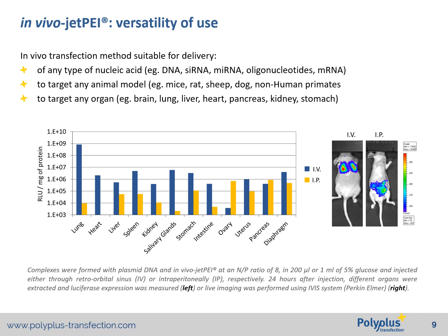When DNA in vivo-jetPEI nanoparticles are injected using the intravenous route or the intraperitoneal route, you can see clear differences in several organs: lung, heart, salivary glands, intestine, spleen, and ovaries.